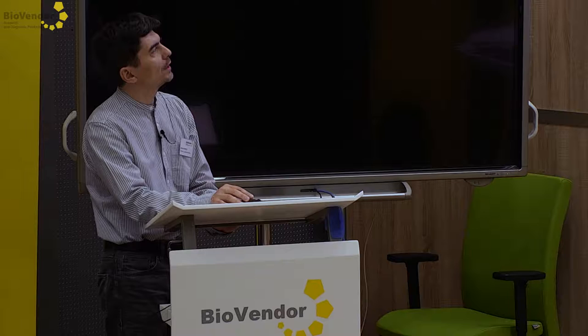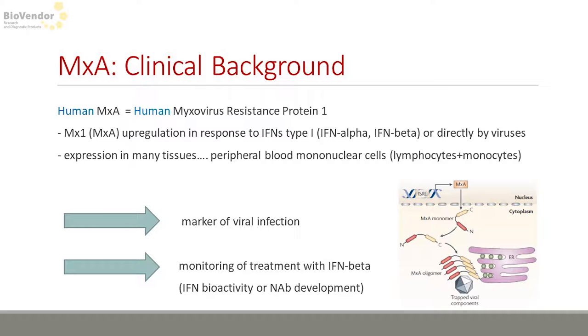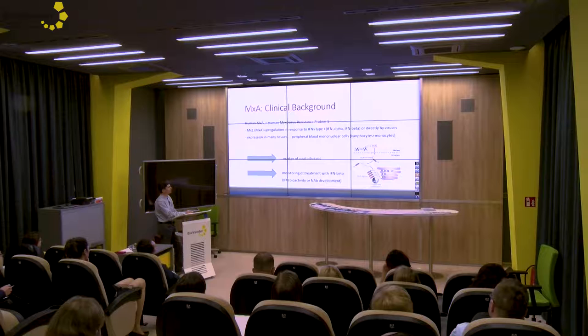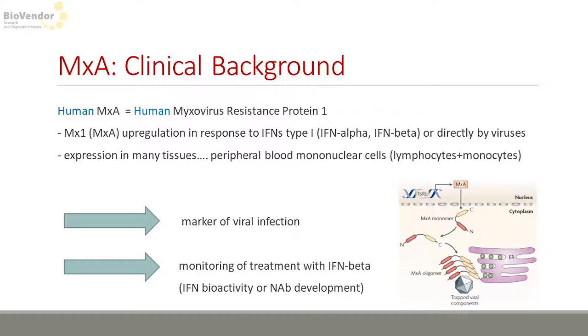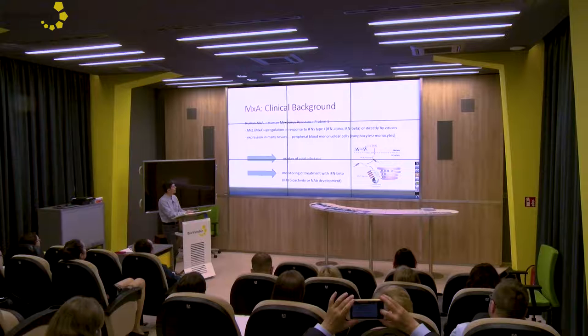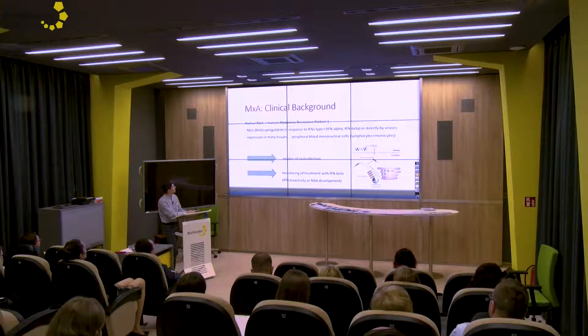Human MXA protein is a product of the gene MX1, and this gene is upregulated in response to interferon alpha and beta, or directly by viruses. Its biological activity is based on oligomers created by MXA, which interact with viral nucleocapsids and inactivate them. MXA is upregulated by interferon and therefore is a marker of viral infection, or can be used for monitoring patients treated with interferon beta therapy. There are two options: determining interferon bioactivity, and monitoring neutralizing antibody development.